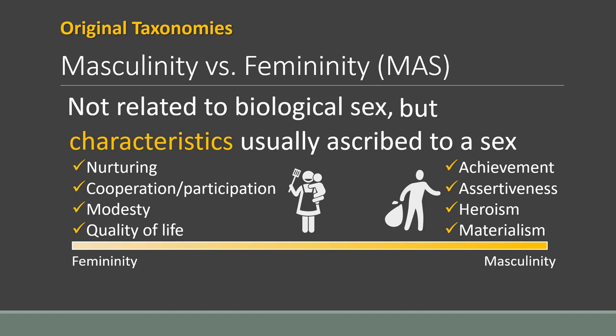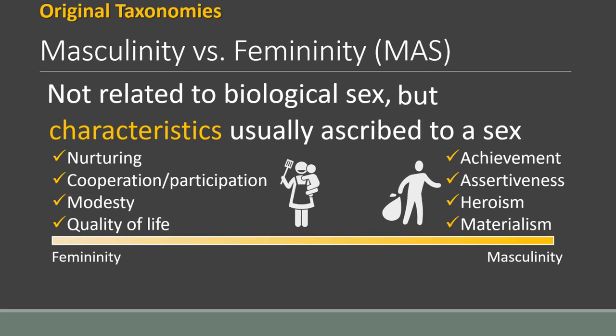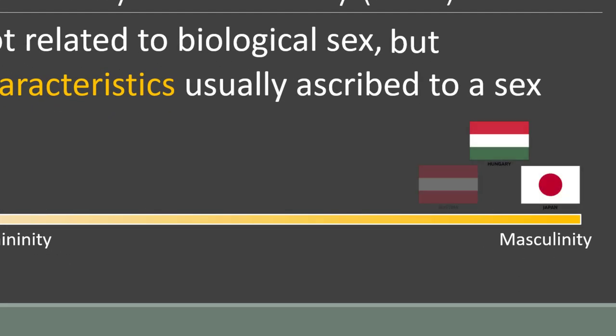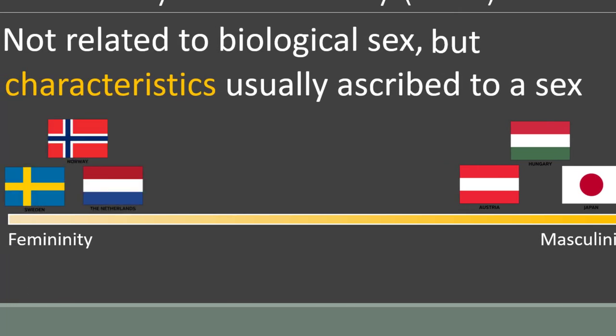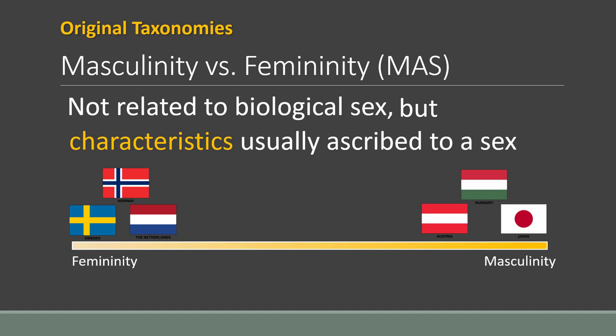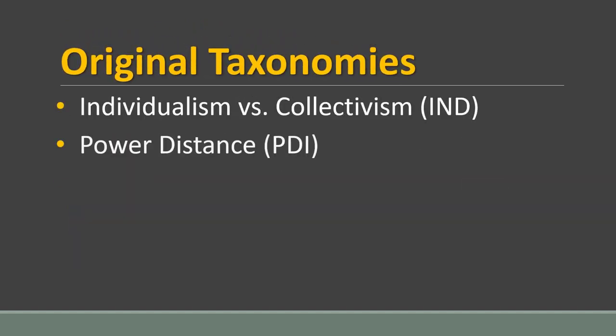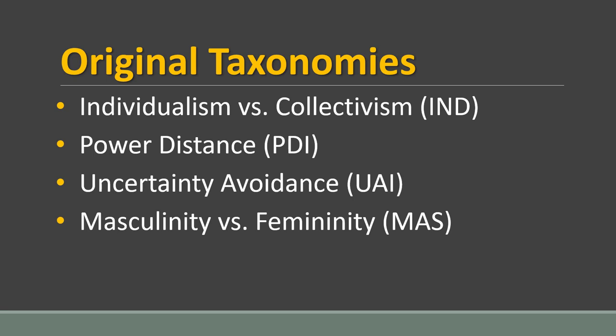In comparison, feminine societies have greater overlap, where men do women's chores and vice versa. Countries scoring high on this scale are considered masculine, such as Japan, Hungary, and Austria. Those landing more on the feminine side of the scale are Sweden, Norway, and the Netherlands. Those are the original four taxonomies, or dimensions. Before we go on, notice that there is an ethnocentric bias in the naming of these dimensions. Hofstede was Dutch and worked for IBM, so it's not surprising that he viewed the research results through an individualistic and masculine lens.